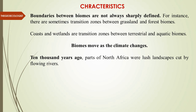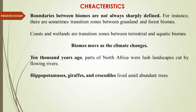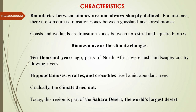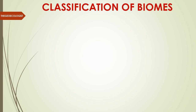Ten thousand years ago, part of North Africa had a lush green landscape cut by rivers. Hippopotamus, giraffe, and crocodiles were abundant in that particular area along with forest. Then, due to climate change, the area completely dried out, and today we know that area as the Sahara Desert — the world's largest desert. That's how biomes move and change in accordance with the climate. The study of biomes in the present condition, where we have anthropocentric climate change, becomes pivotal for humanity.